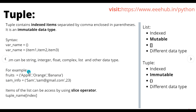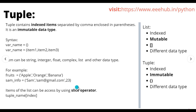Here we have an example: the fruit tuple contains items like apple, orange, and banana — apple has index zero, orange has index one, and banana has index two. Similarly, we have a second example, sam_info, where inside the parentheses we have 'sam', then 'sam@gmail.com', and then an integer age value of 23, all separated by commas.